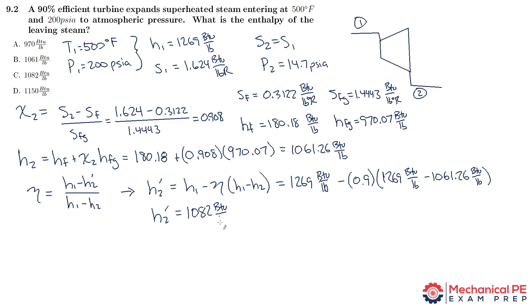As a sense check, compare that to 1061. If the enthalpy at state 2 had gotten as low as 1061, we'd have 100% isentropic efficiency. But it only gets down to 1082 — that's why the efficiency is only 90%. So the best answer choice is C. Would you like more solution videos like this one so you can pass the PE exam?